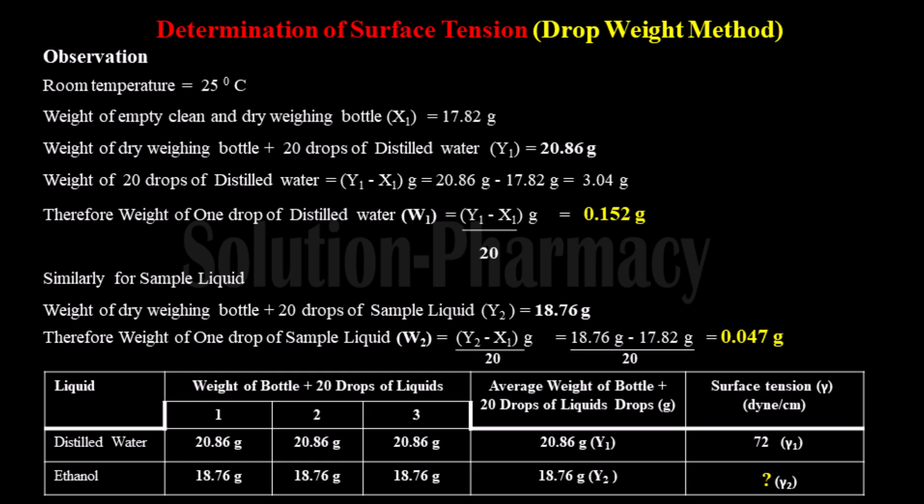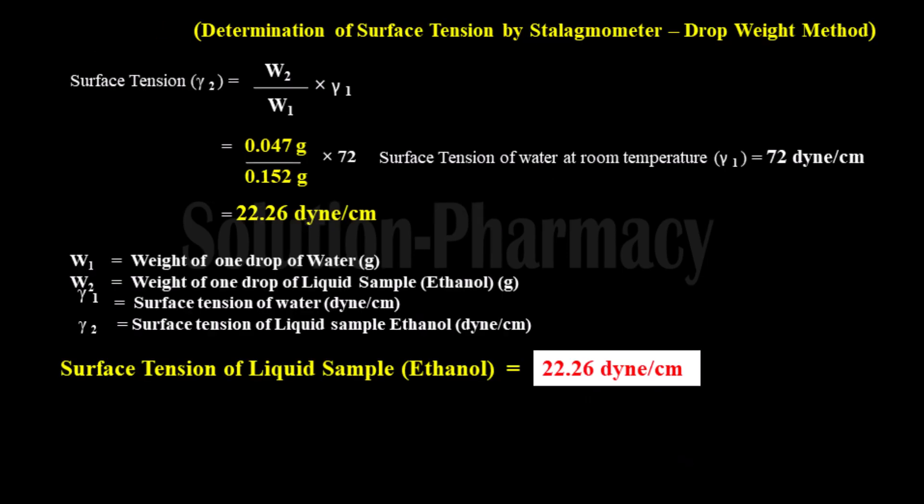The surface tension of distilled water at 25°C is 72 dyne per centimeter — this is the standard value. The surface tension of ethanol is what we need to calculate. The formula for surface tension: γ₂ = (w2/w1) × γ₁, where γ₁ is the surface tension of water (72 dyne/cm), w1 is the weight of one drop of distilled water, and w2 is the weight of one drop of sample liquid.